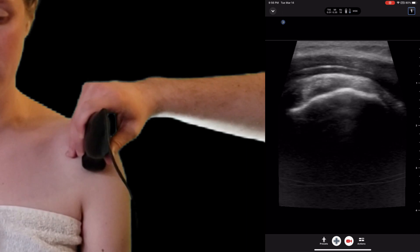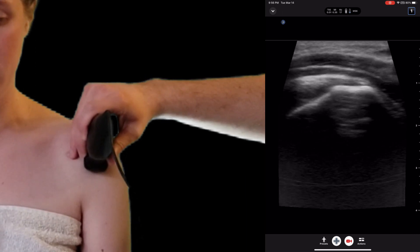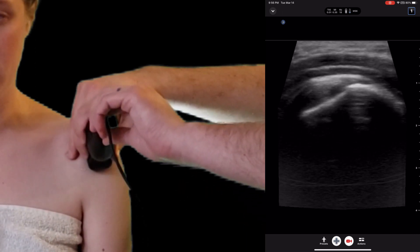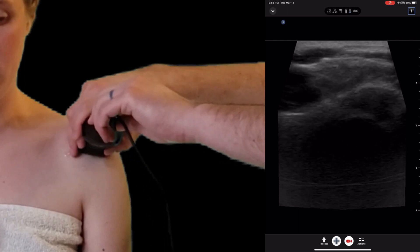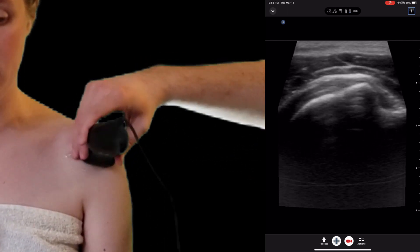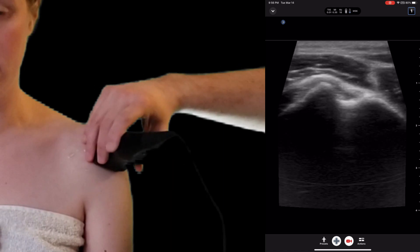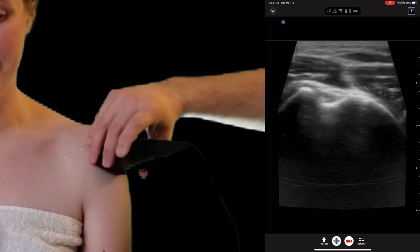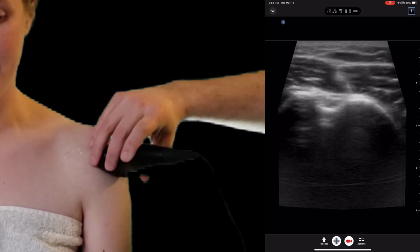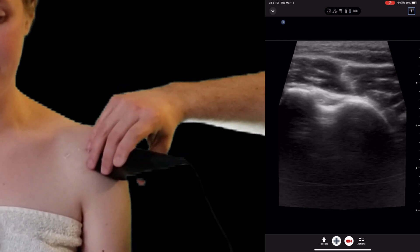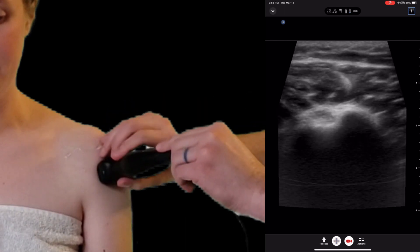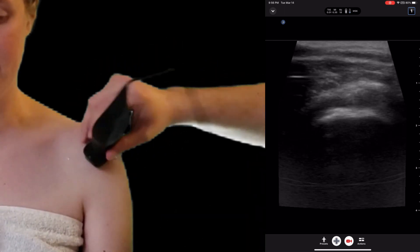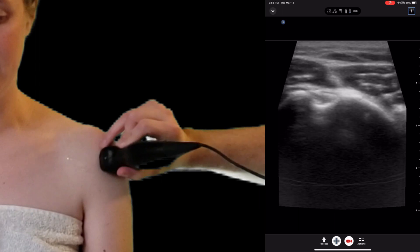Once we've evaluated the subscapularis in its entirety, we'll turn back to a transverse view, find the bicipital groove again, and then we will go laterally to find the infraspinatus.